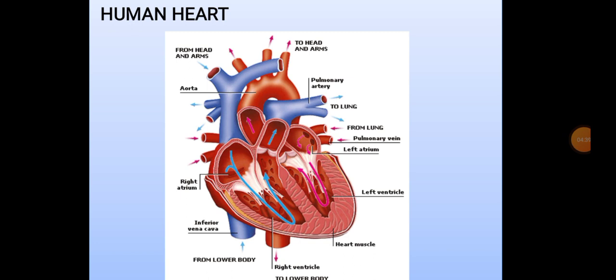Heartbeat is the combined effect of contractions and relaxations of the cardiac muscles occurring in two phases. The auricles contract first to force blood into the two ventricles on either side, producing a 'lub' sound. Later, the two ventricles contract to send blood into arteries moving towards the body and the pulmonary artery moving towards the lungs, producing a 'dub' sound.